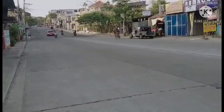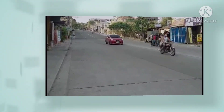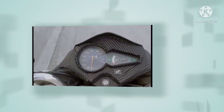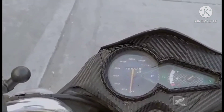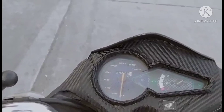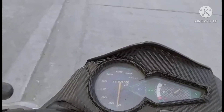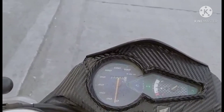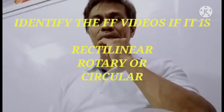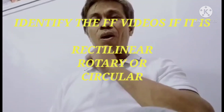One way of describing it precisely is what we call as speed. Speed is the time rate of motion. Speed is measured by a speedometer. This one is the speedometer of my bike. That's what we call as instantaneous speed. Because there are two kinds of speed: average and instantaneous speed. Our speedometer measures instantaneous speed. I'll be giving you different videos and you're going to identify whether it is rectilinear, rotary, or circular motion.